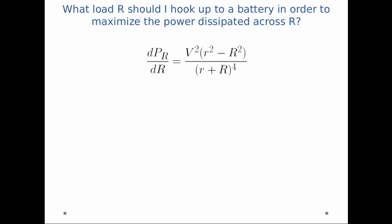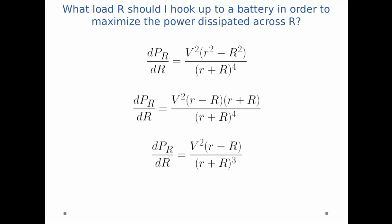And I can simplify a little bit more. I get V squared times r squared minus big R squared divided by little r plus big R to the fourth. I can expand the little r squared minus big R squared, and I can cancel out a term in the bottom and the top. And I get V squared times little r minus big R divided by little r plus big R quantity cubed is the derivative.